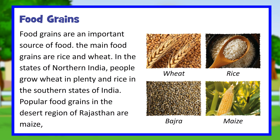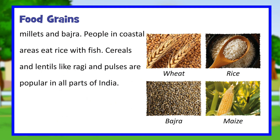Food grains. Food grains are an important source of food. The main food grains are rice and wheat. In the states of northern India, people grow wheat in plenty, and rice in the southern states of India. Popular food grains in the desert region of Rajasthan are maize, millet, and bajra. People in coastal areas eat rice with fish, cereals, and lentils like ragi. Pulses are popular in all parts of India.